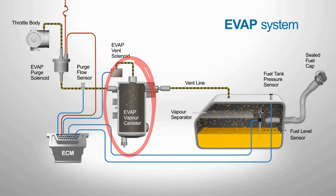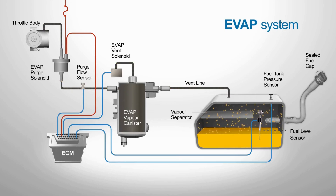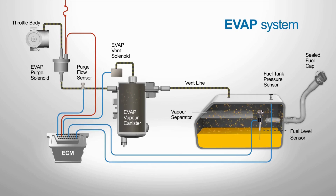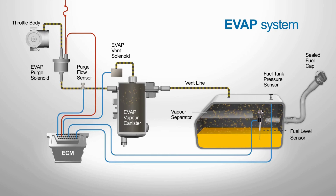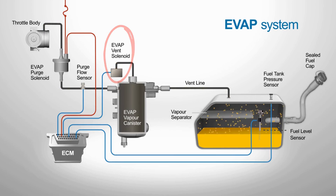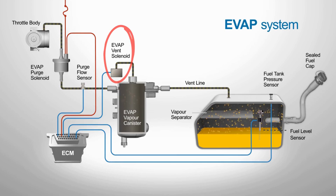Once the engine is running and the conditions are right, the purge valve opens. This allows those stored vapors to flow into the engine, where they're burned during the normal combustion process. The vent valve usually stays open, allowing fresh air to flow into the charcoal canister to ensure proper operation.